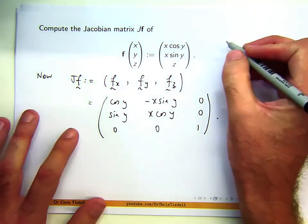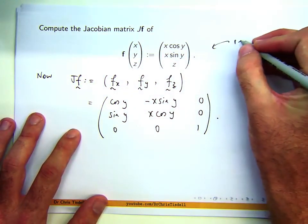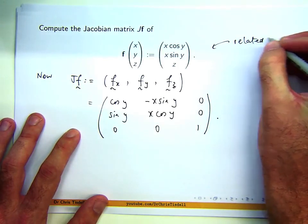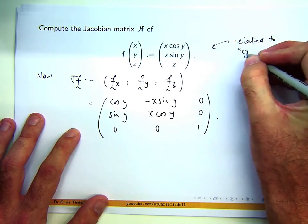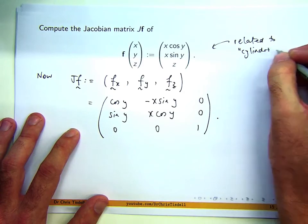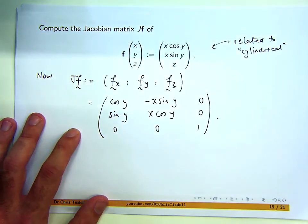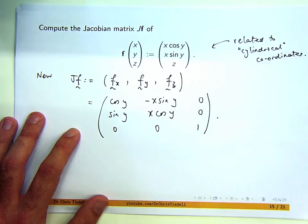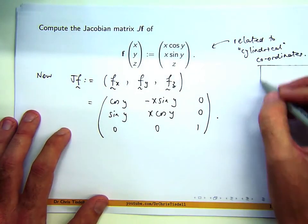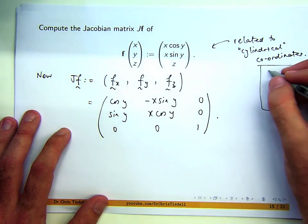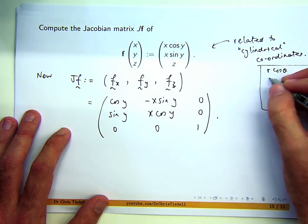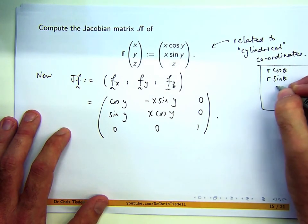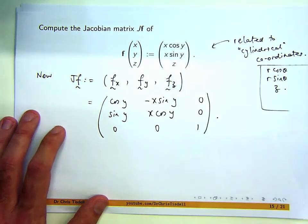If I was to just make a little note - it's related to cylindrical coordinates or cylindrical transformation. Usually in that case you have r cos theta, r sin theta, and just z, but here we've got x's and y's.